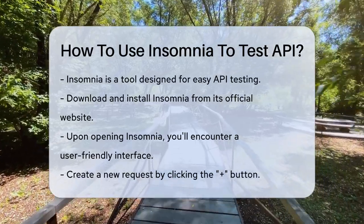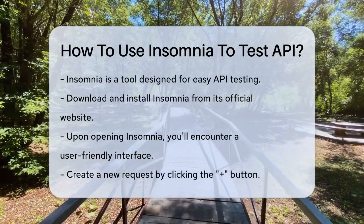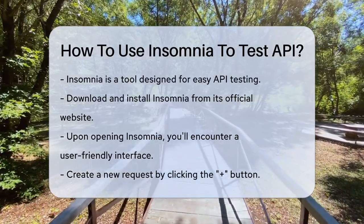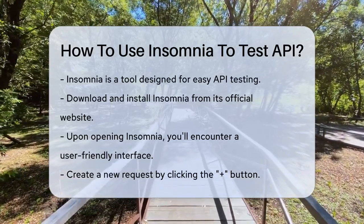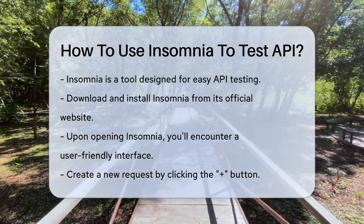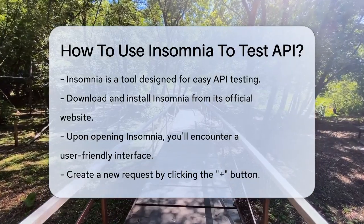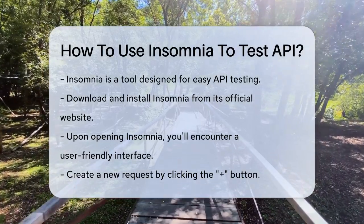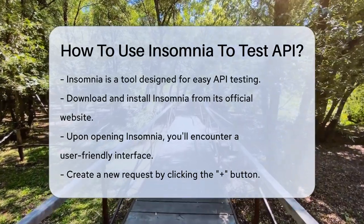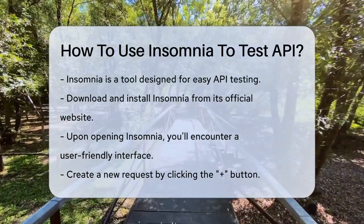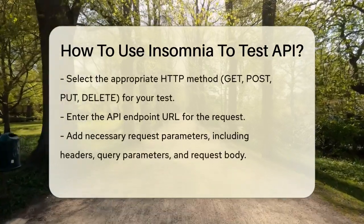Next, configure the request details. Choose the HTTP method you need — whether it's GET, POST, PUT, or DELETE — and enter the API endpoint URL. For example, if you're testing a simple GET request, you would select GET and enter the URL of the API endpoint.